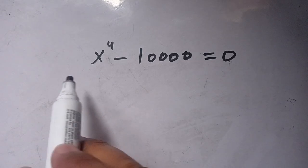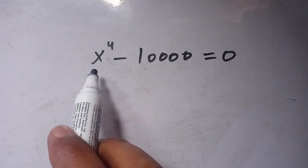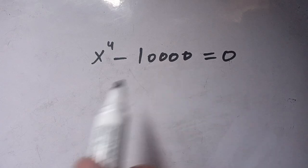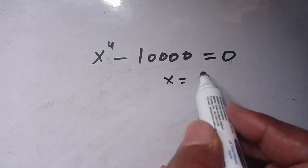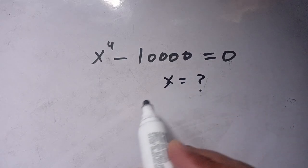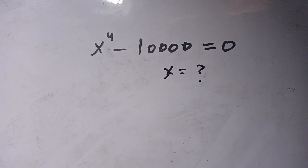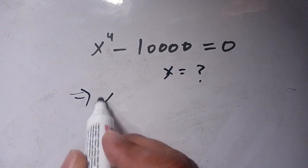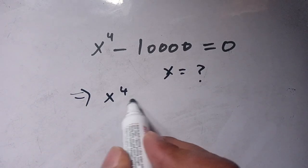Hello everyone. In today's video we are going to solve the equation x to the power 4 minus 10,000 is equal to 0, and we have to find its roots — that is, the values of x which satisfy this equation.